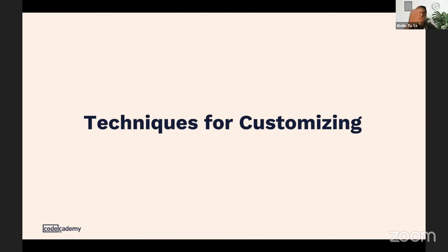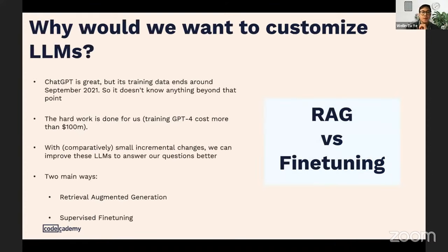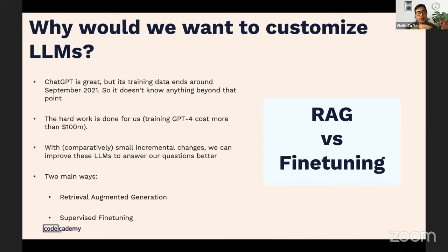Now let's talk about techniques for customizing these models. Why would we want to customize LLMs in the first place? ChatGPT's training data ends around September 2021, so it doesn't know anything beyond that. The good news is that with comparatively small incremental changes we can tweak GPT-4 or open-source LLMs to suit our needs. There are two main approaches: retrieval augmented generation (RAG) and fine-tuning. RAG is the simpler approach and usually the first thing you want to consider.